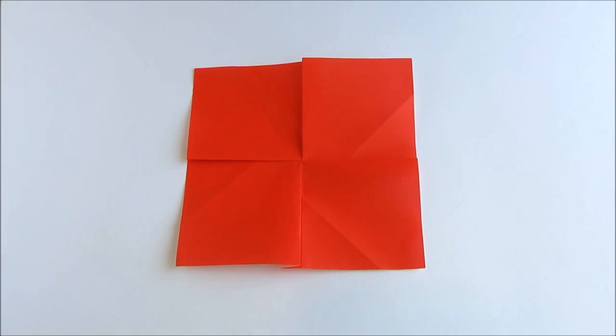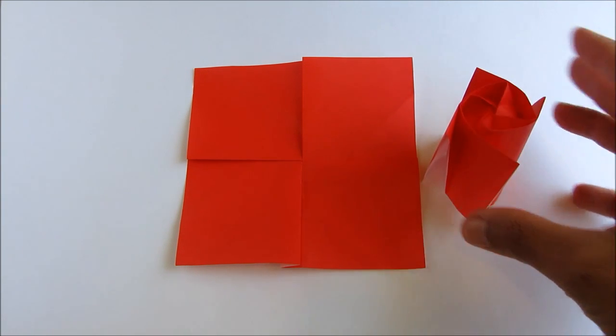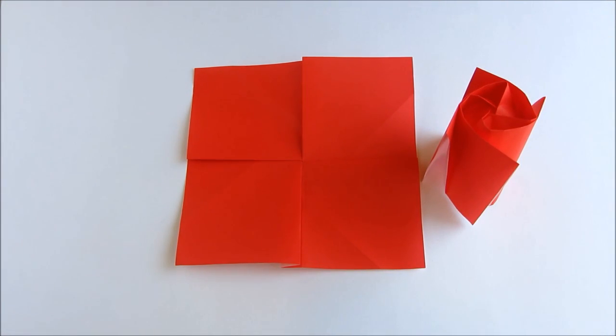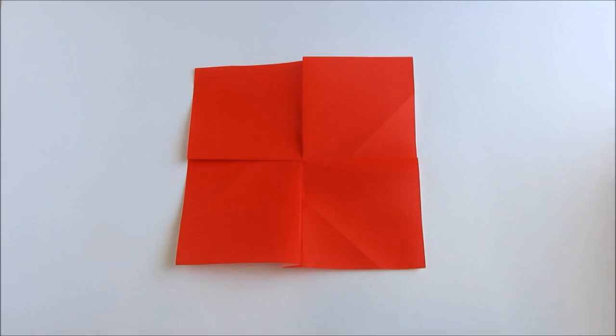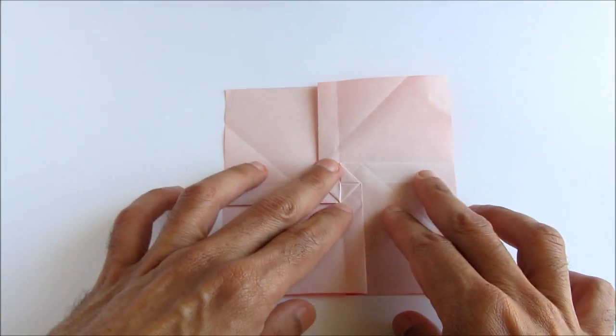And ultimately what we want is a cylinder, because the rose has kind of a cylindrical shape. So the question is how do we go from the square to the cylinder. So that's the next step, and probably the trickiest step. So first flip the paper over.